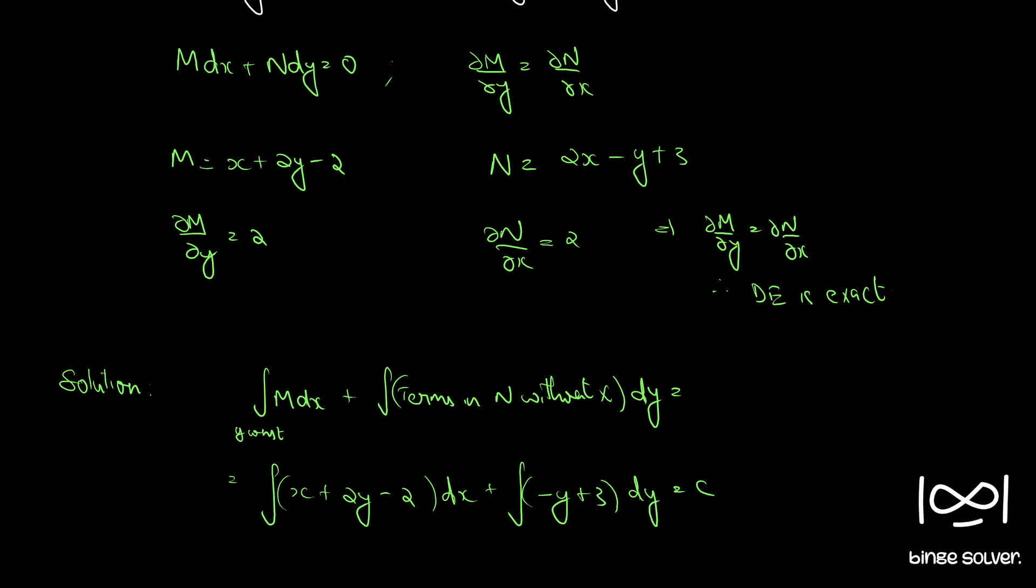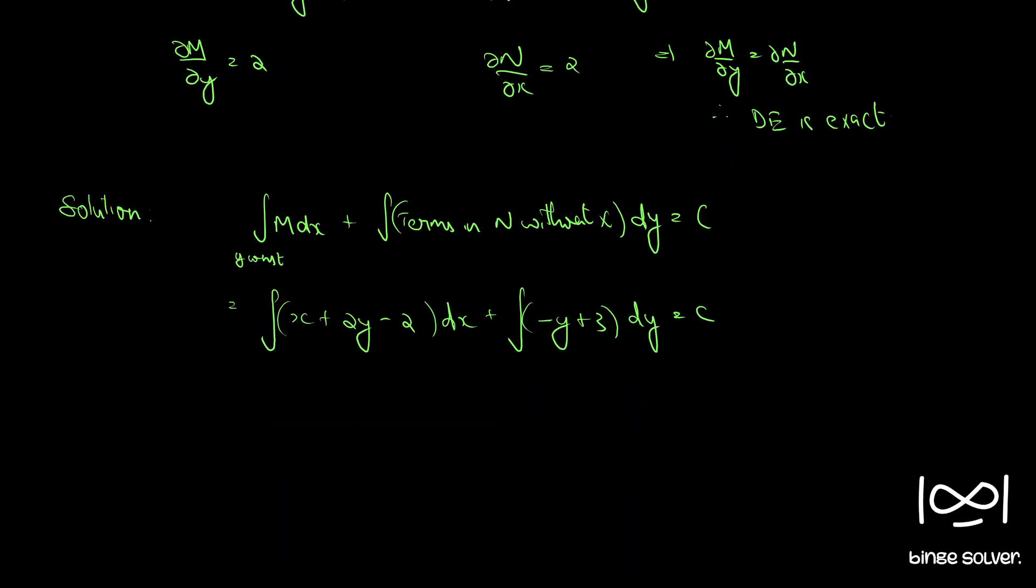Here it was c not 0, c, a constant. So we get answer x square by 2